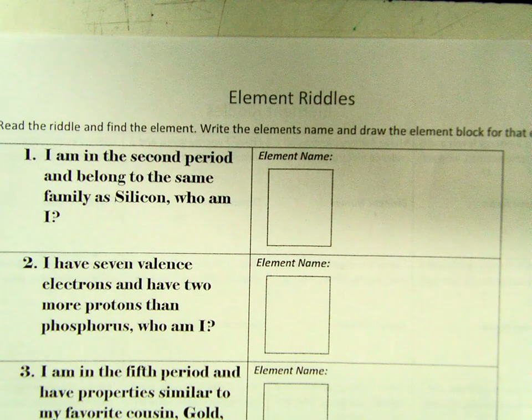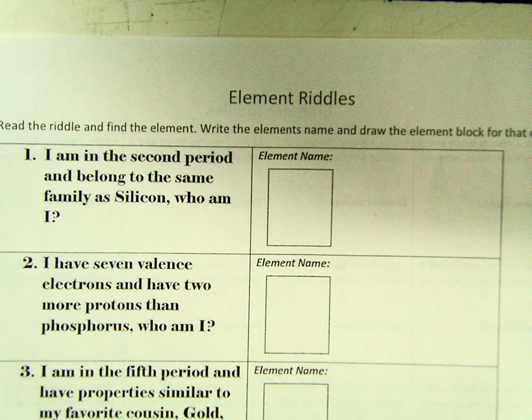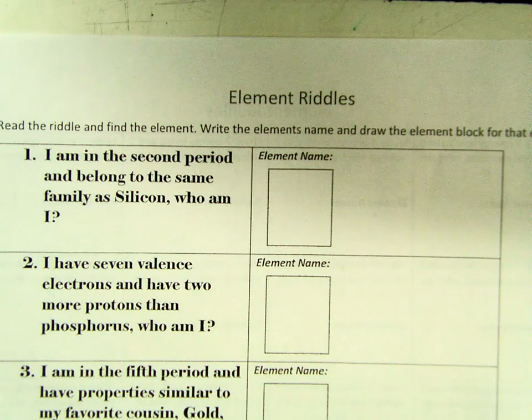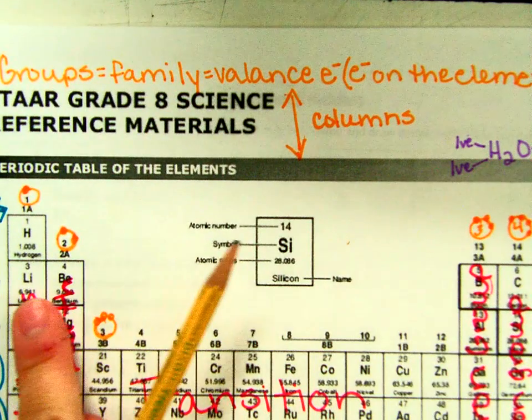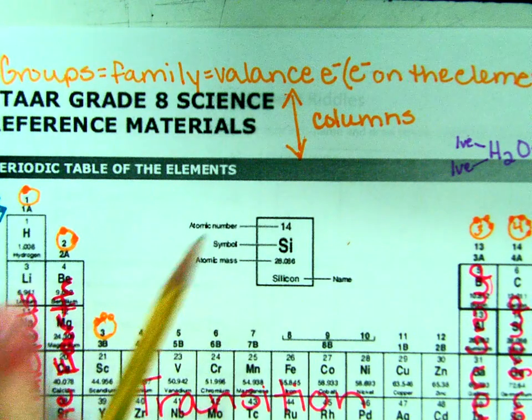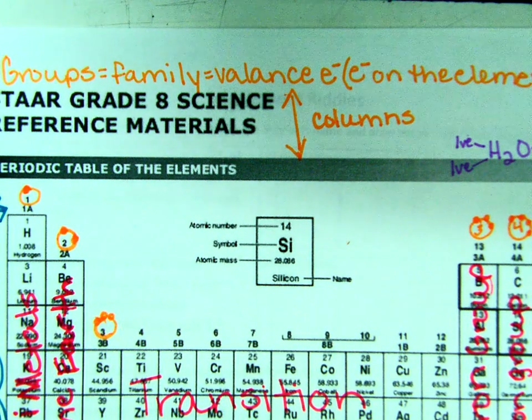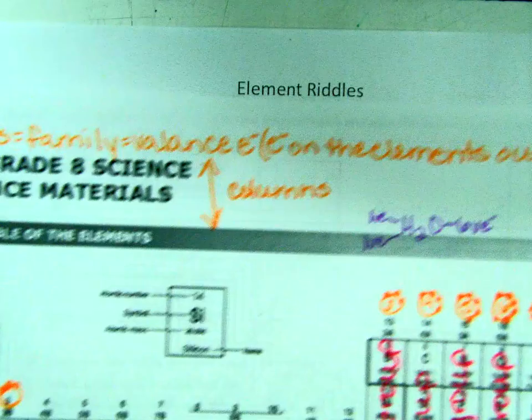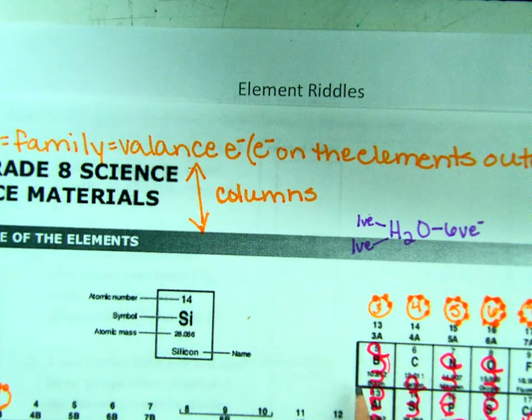It says I'm in the second period and I belong to the same family as silicone. So second period means the second row, so you're going to come across. And it's the same family as silicone, so that means it's going to be in line, in a column with silicone.